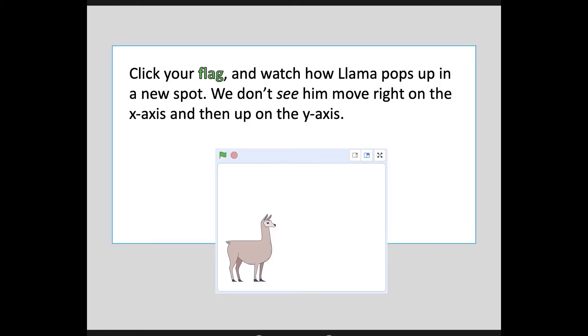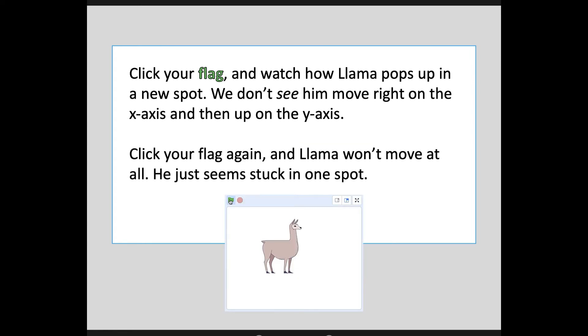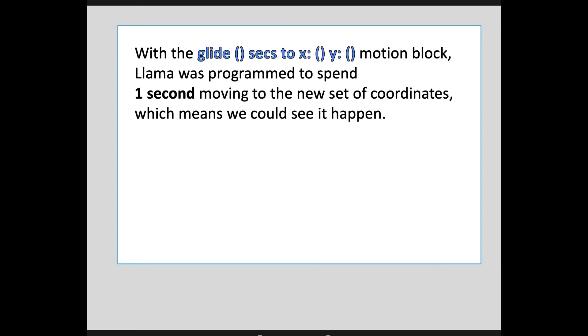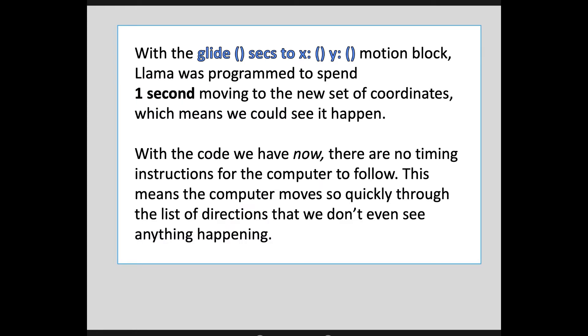Click your flag and watch how Llama pops up in a new spot. We don't see him move right on the X axis and then up on the Y axis. Click your flag again and Llama won't move at all — he just seems stuck in one spot. With the glide motion block, Llama was programmed to spend one second moving to new coordinates, which means we could see it happen. With the code we have now, there are no timing instructions, so the computer moves so quickly through that list of directions that we don't even see anything happening — it's basically instantaneous.